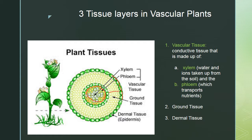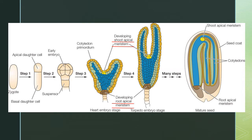A helpful hint: primary growth means up and down — it makes the plant taller. Secondary growth produces the girth or width of the plant. Apical meristems are present in the embryo and at the tips of roots and shoots. The shoot apical meristem produces the top part of the plant, and the root apical meristem remains throughout plant life to create primary growth.